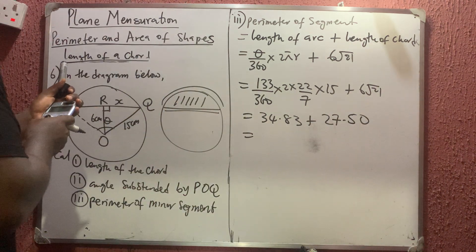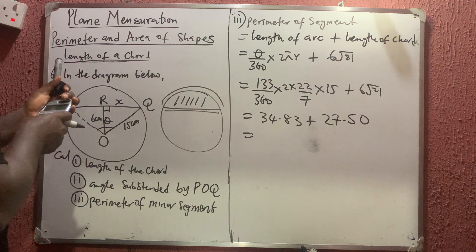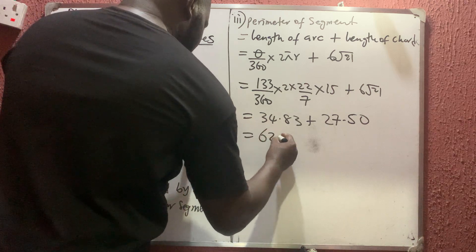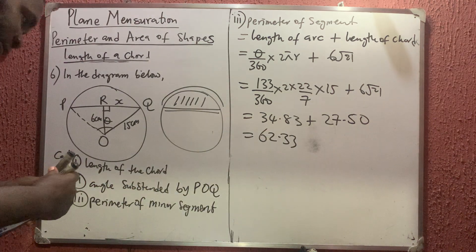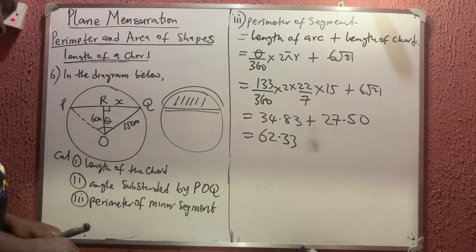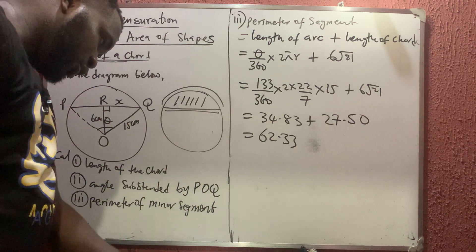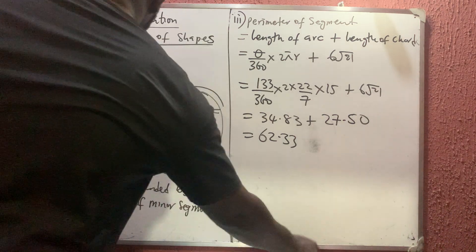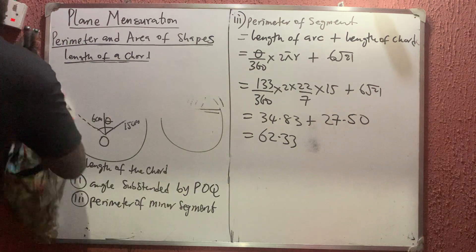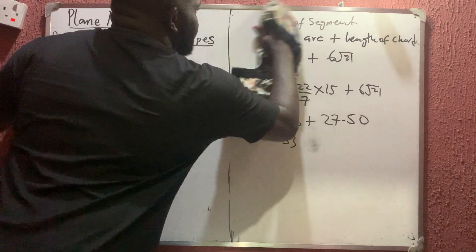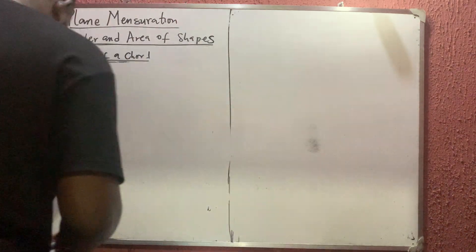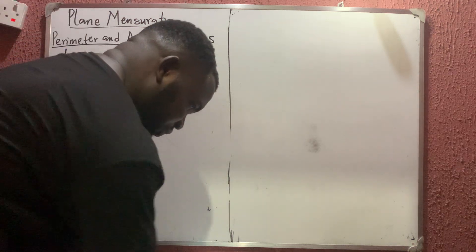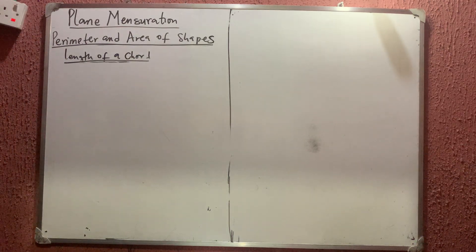Adding them together: 34.83 + 27.50 ≈ 62.33 cm. That is the perimeter of the minor segment. These problems are very straightforward — you just need to know the right formula to use.